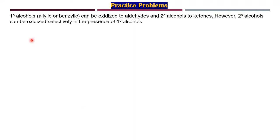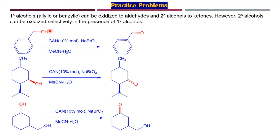Another type of reaction CAN can undergo: primary allylic or benzylic alcohols can be oxidized to aldehydes, and secondary alcohols to ketones. If both primary and secondary alcohols are present, selectively the secondary will be oxidized — very similar to what Ag₂CO₃ on celite does. Benzyl alcohol using CAN and sodium bromate gives benzaldehyde. Secondary alcohols are converted to ketones, and if both primary and secondary alcohols are present, the secondary is selectively oxidized.